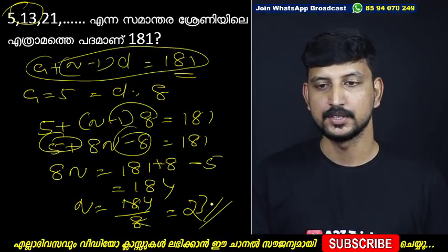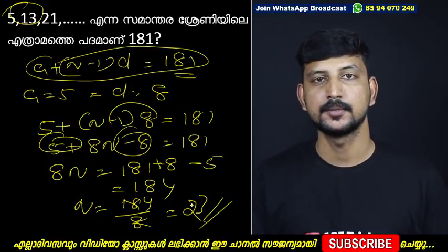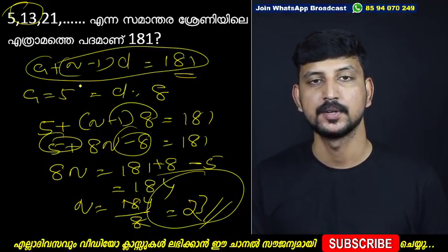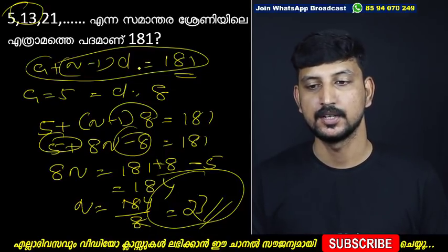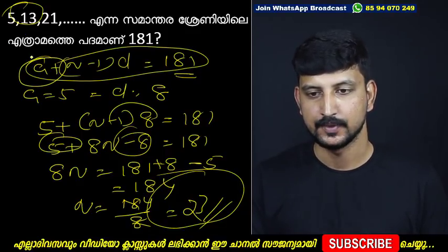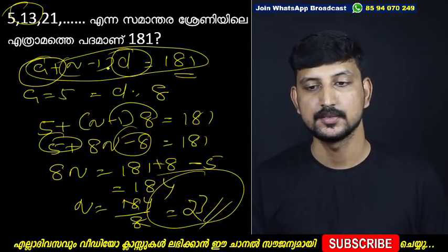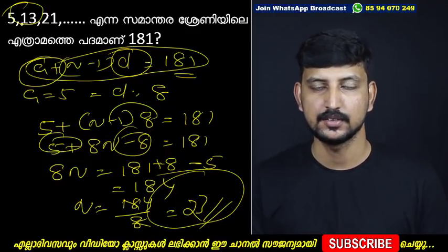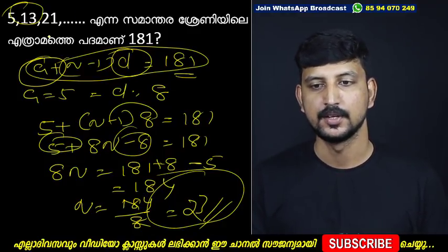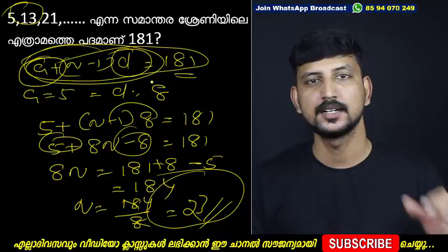Now we have the answer. We have the answer: 23. We have the answer to a plus n minus 1 into d. A plus n minus 1 into d. We have the answer: 24. We could say that 24 is the answer. The answer is 18, but we do different things. For 24, 24 is the answer.